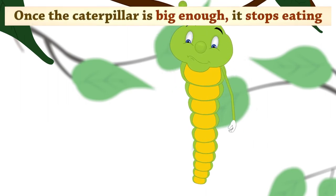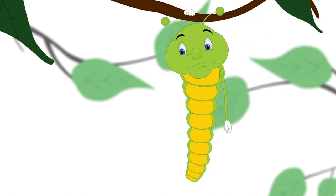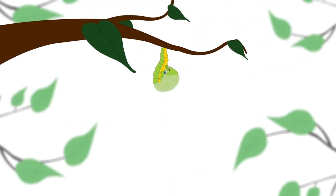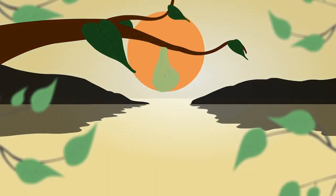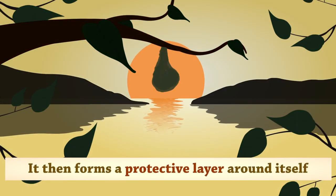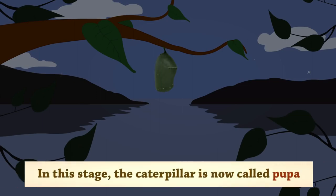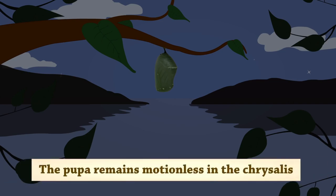Once the caterpillar is big enough, it stops eating. It then forms a protective layer around itself. This stage is called chrysalis. In this stage, the caterpillar is now called pupa. The pupa remains motionless in the chrysalis.